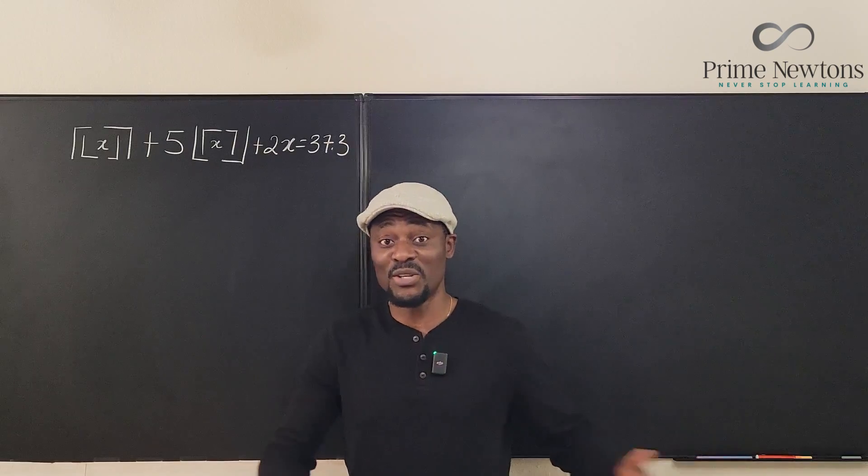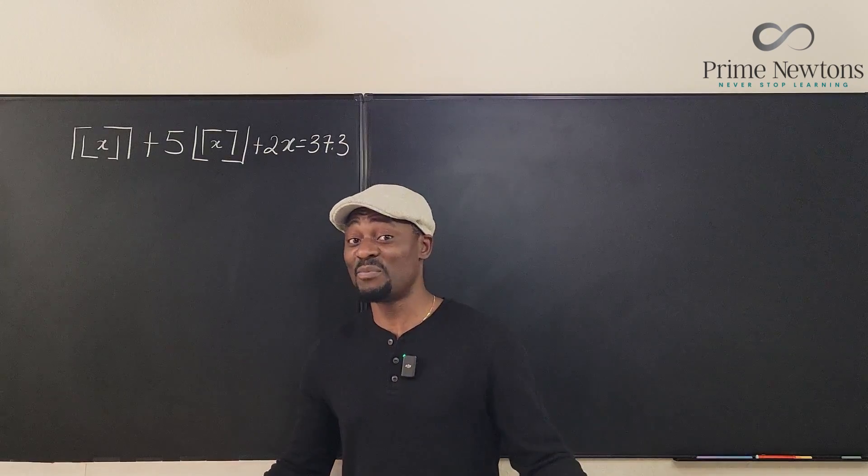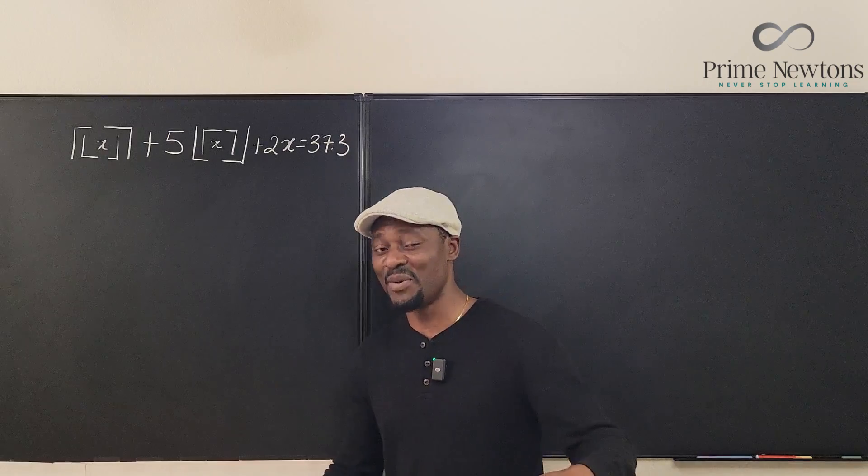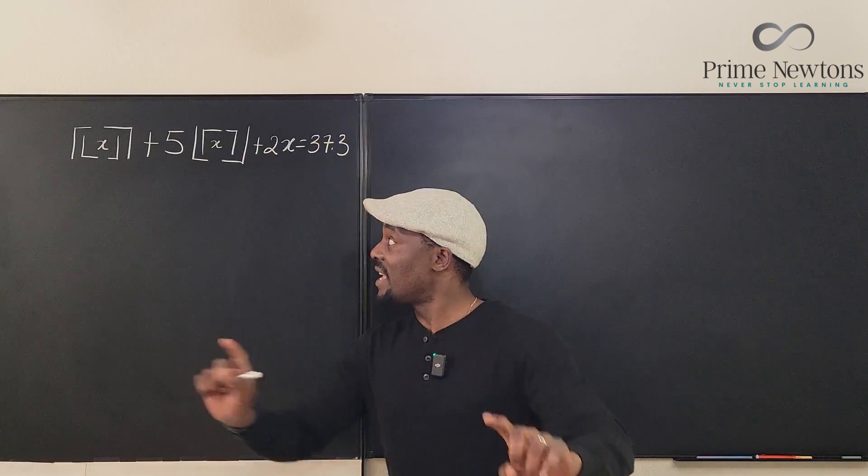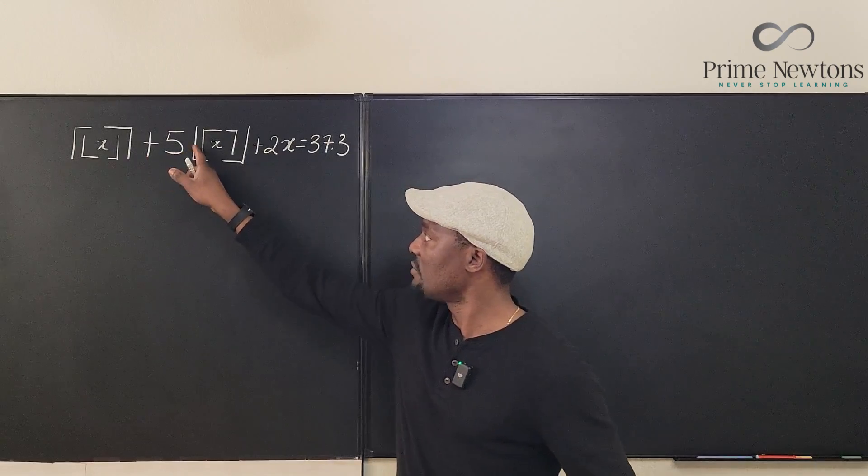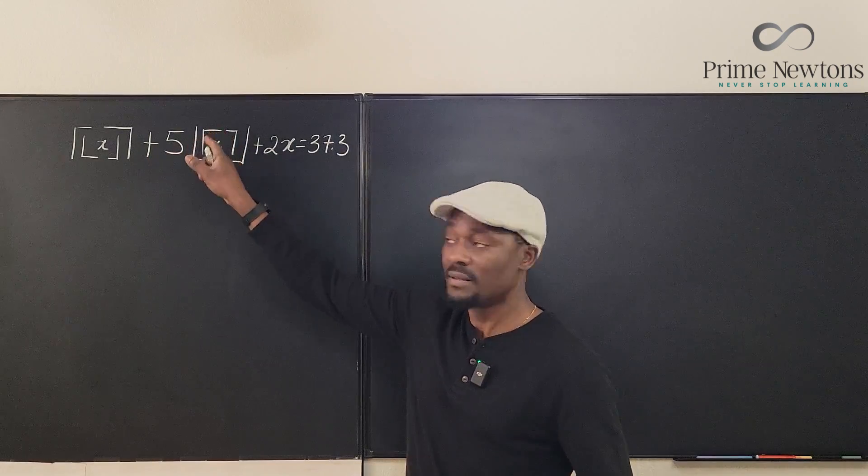That would be a big plus. Okay, I need to hear from you. Now this is the ceiling of a floor plus 5 times the floor of a ceiling plus 2 times the number equals 37.3.